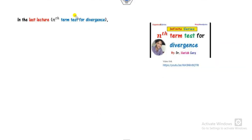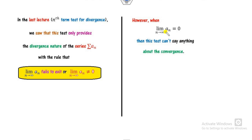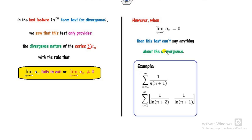In our last lecture we discussed the nth term test for divergence. This test is applicable only to describe the divergence nature of a series. The rule is: when you calculate the limit of aₙ, if it is infinite or non-zero, we can say the series is divergent. However, when the limit of aₙ is zero, this test cannot say anything about the convergence of the series.